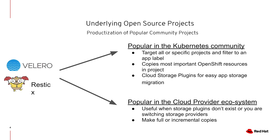Restic allows you to do full or incremental copies of your PVs during the migration process to accelerate the migration from one side to another. By combining both tools, we can migrate all the resources inside one project at the same time while being efficient on the PV side to copy the data from source to your target destination.